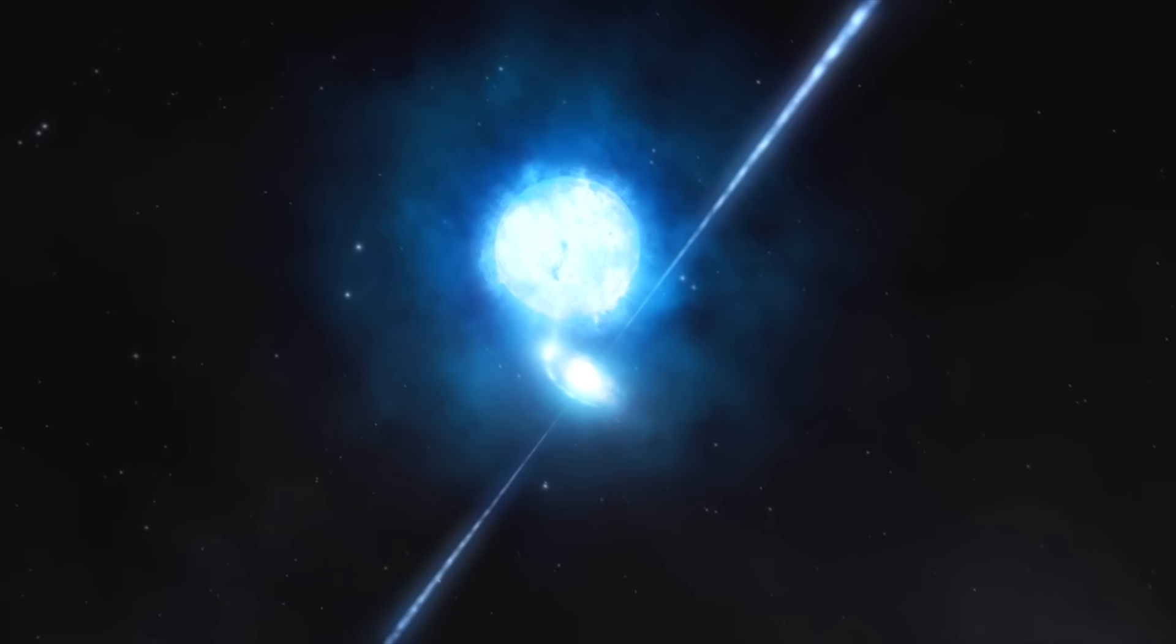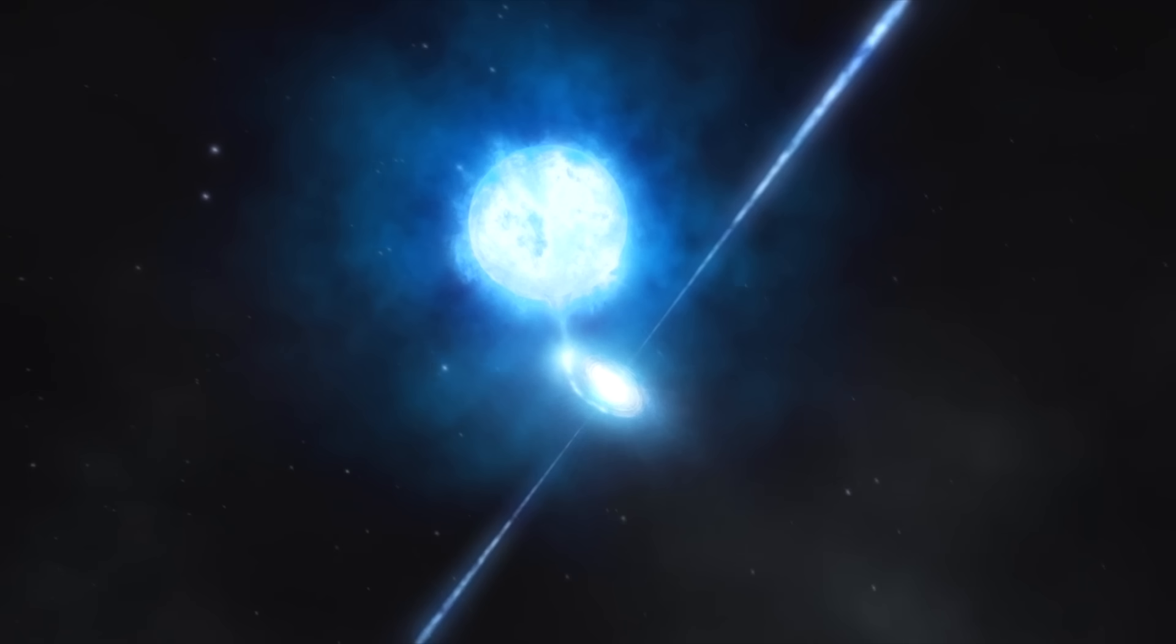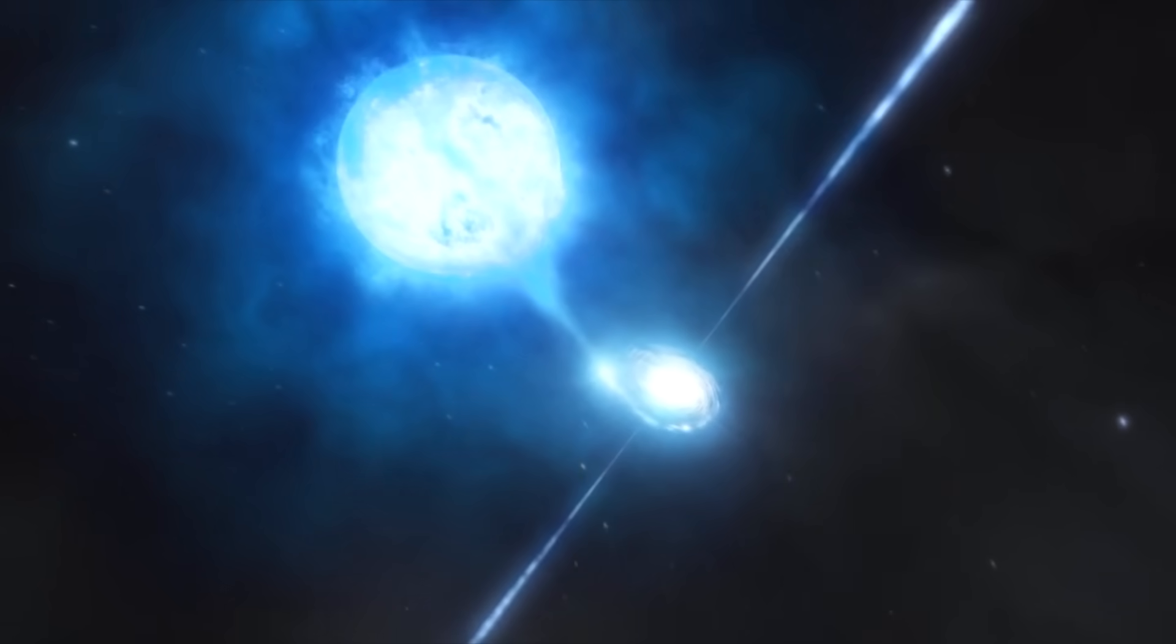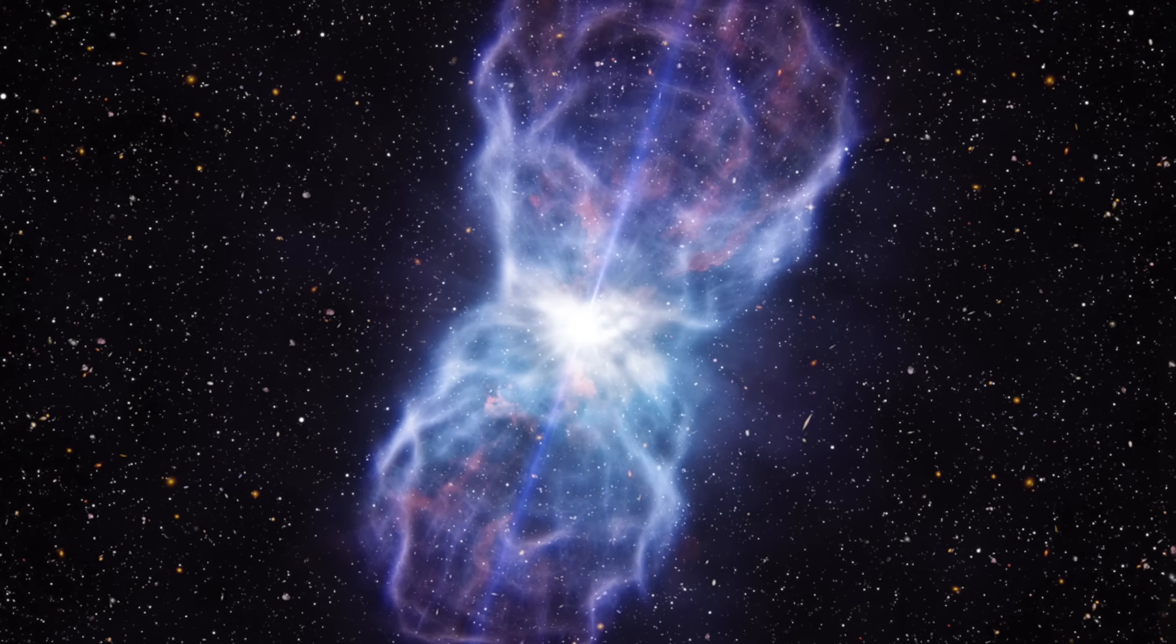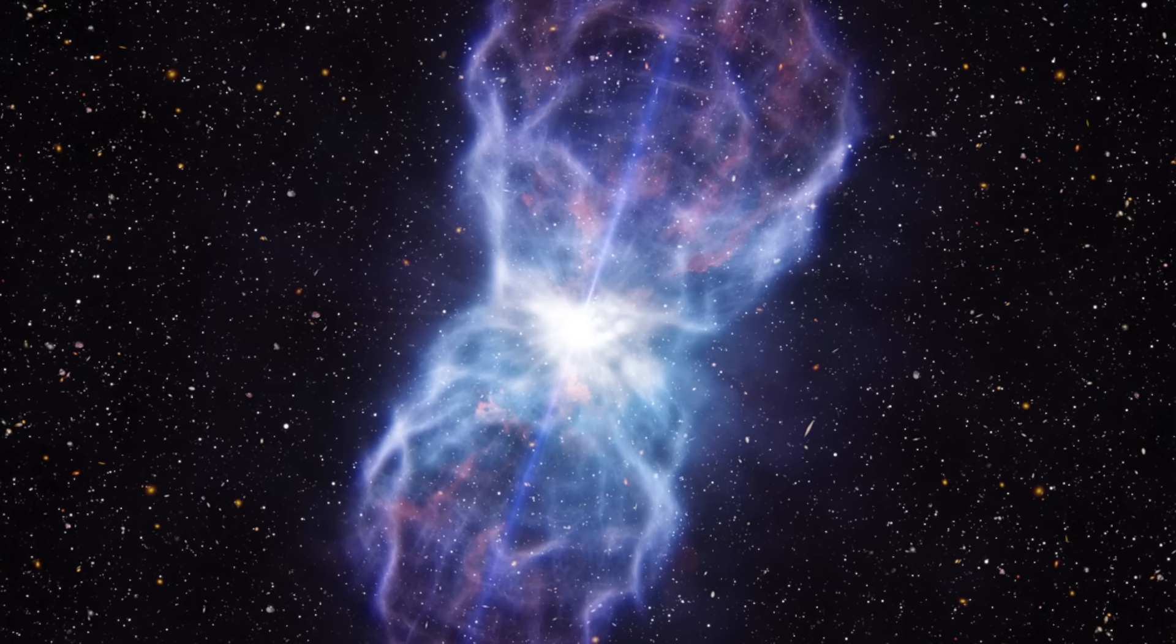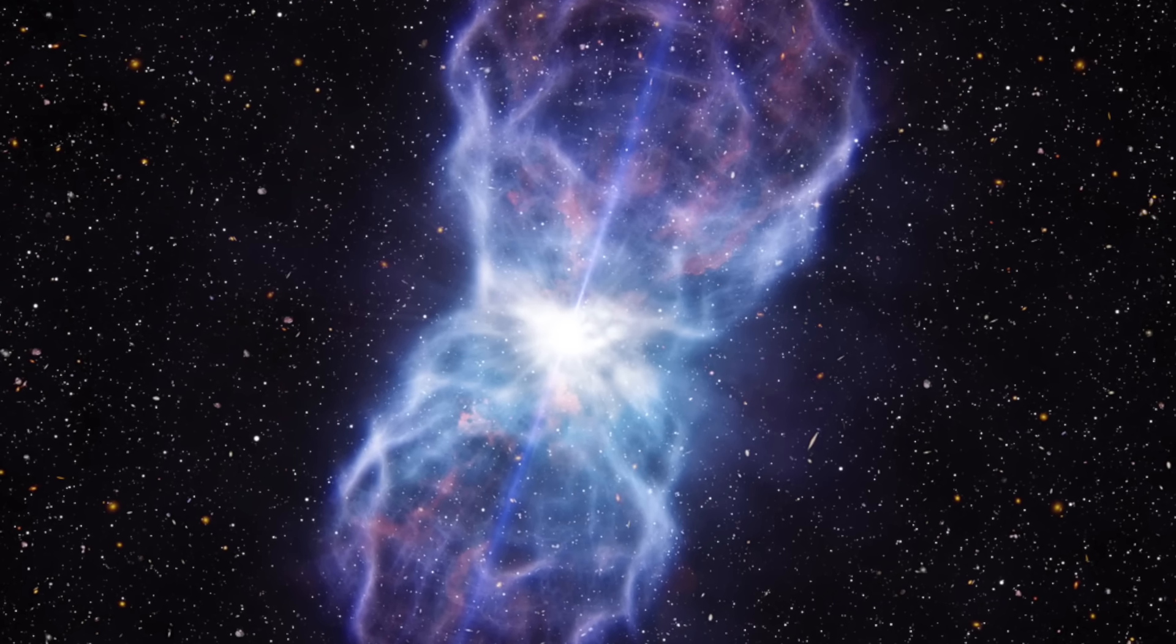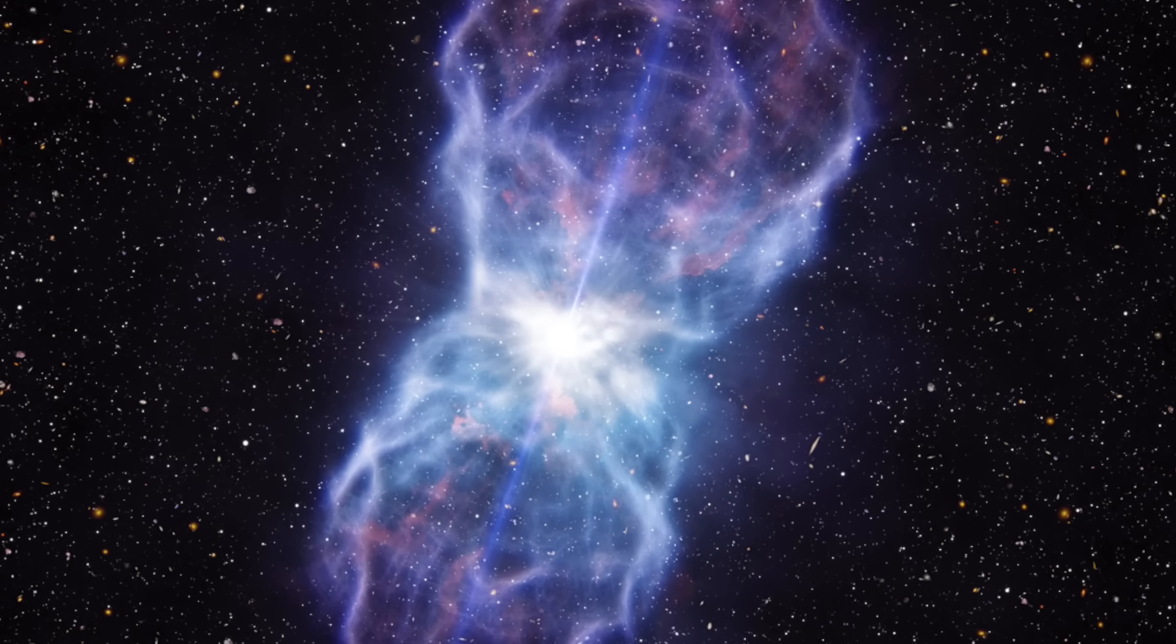So quasars are the most massive of supermassive black holes. They're not your everyday supermassive black hole, they're the biggest ones, and they're found in the biggest galaxies, and they eat a lot of material. When they start accreting a lot of material, they get very, very, very bright. And that is what qualifies them as a quasar, is their brightness. These are basically the most powerful objects in the universe that we know of, right? Yes, correct.